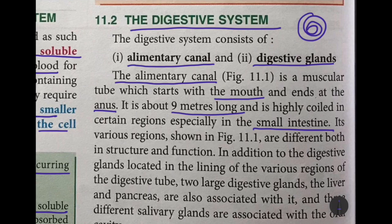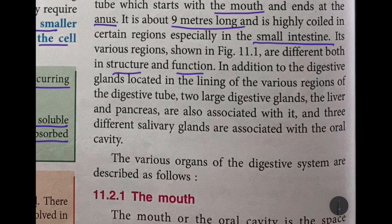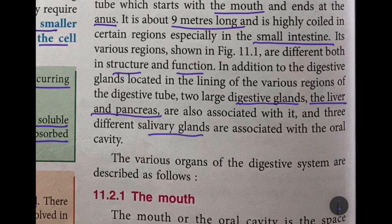Its different regions are different both in structure as well as in function. In addition to the digestive glands located in the lining of various regions of the digestive tube, there are two very large digestive glands — the liver and the pancreas. So if you are asked to name a digestive gland, you would name either the liver or the pancreas. Three salivary glands are also found in the oral cavity, that is the mouth.